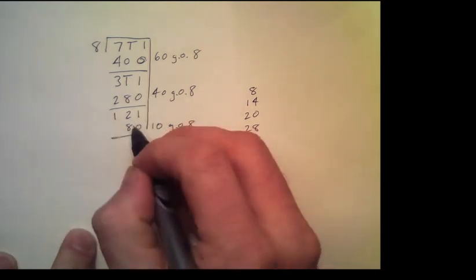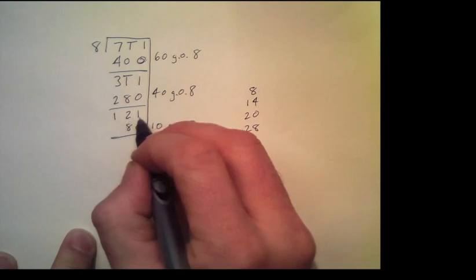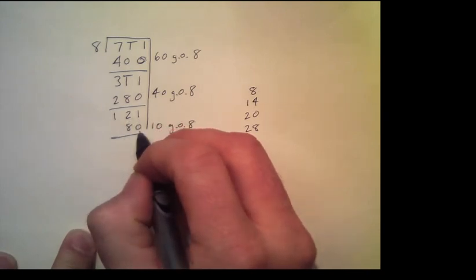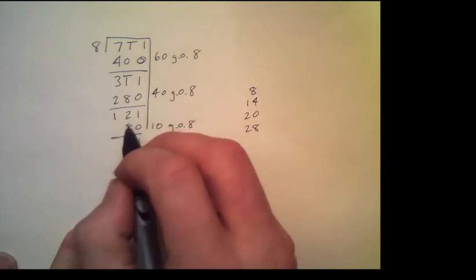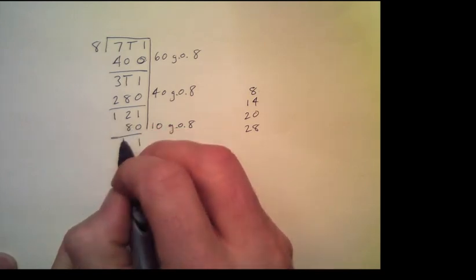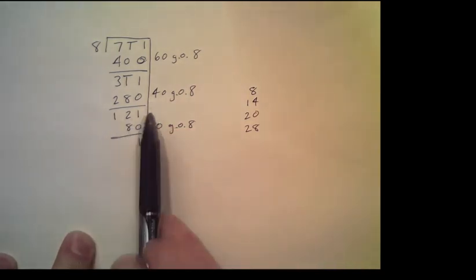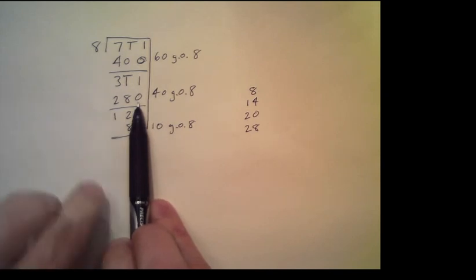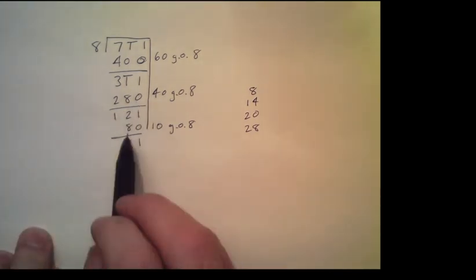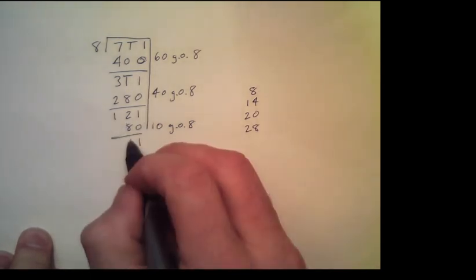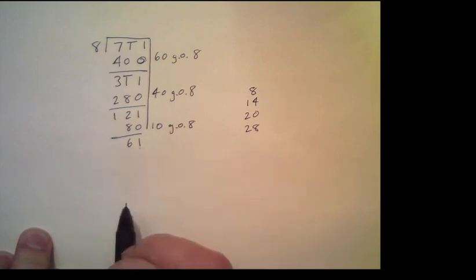So now we say a gross 2 dozen 1 minus 8 dozen is just going to be, so again, I'm going to go from right to left, 1 dozen, and then this is not so trivial, but 8 from, this is 8 from a dozen and 2, so at this point, if we just consider this 8 from a dozen and 2, let's see, 8 from a dozen would be 4, so 8 from a dozen and 2 would be 6, and we're left with 6 dozen and 1.